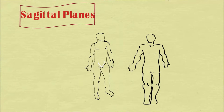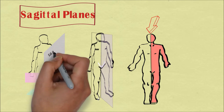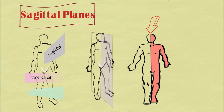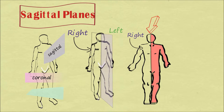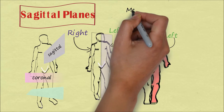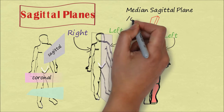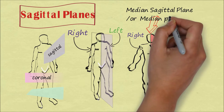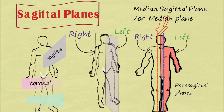The next plane is the sagittal plane. The sagittal plane is also oriented vertically like the coronal plane, but the difference is that these two planes lie at right angles to each other. The sagittal plane divides our body into a right side and a left side — remember that right and left are according to the person's own body. The plane that passes through the center of the body and divides it into two equal parts is known as the median sagittal plane or median plane. Planes parallel to the median sagittal plane are known as parasagittal planes.